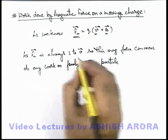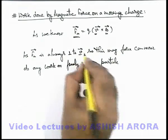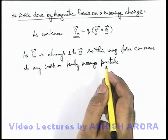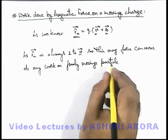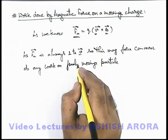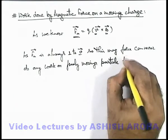Because if force is acting in a direction perpendicular to velocity, in the direction of force there will never be any displacement. So for freely moving particles, we can always state that magnetic force can never do any work, and hence we can say